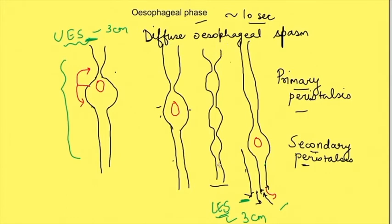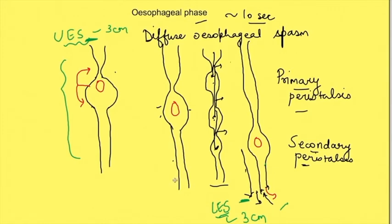In diffuse esophageal spasm, if we measure the pressures inside the esophagus, we insert multiple sensors at multiple points in the esophagus. We will see that at various points there is increased pressure — wherever there is contraction there will be increased pressure — which does not happen in normal peristalsis.